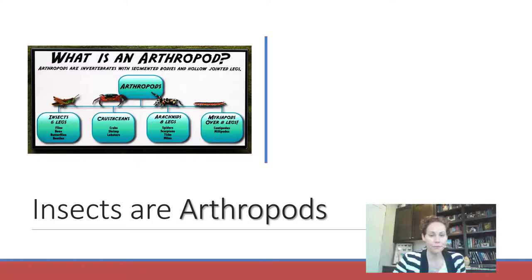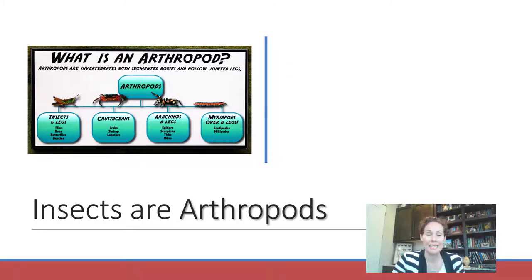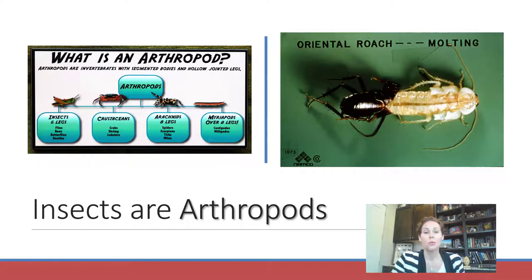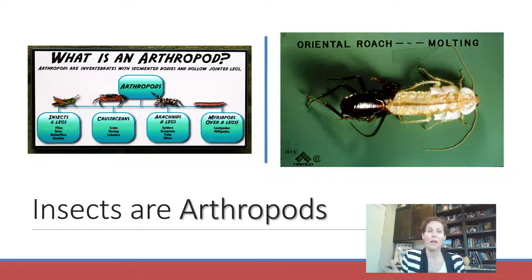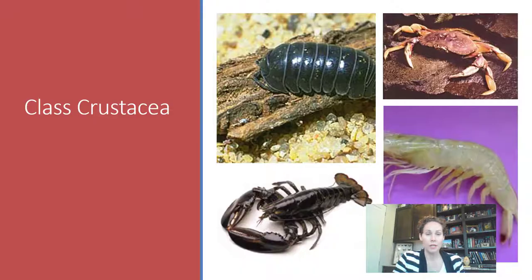Insects are in phylum Arthropoda — but what is an arthropod? There are other classes of arthropods, because class Insecta is just one class under that group. To be an arthropod, you must have an exoskeleton, and that exoskeleton has to be shed in order to grow. That's how they complete their life cycle — they go through a series of molting, as discussed in part one.